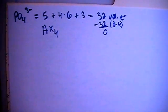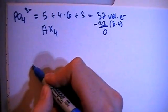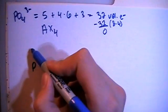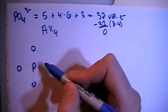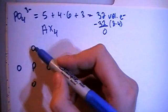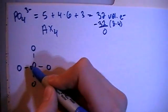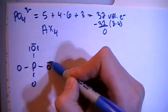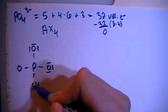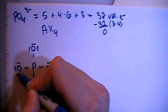So let's go ahead and start to draw this structure. We have the phosphorus in the center surrounded by the four oxygens. And we can go ahead and single bond all of the oxygens to the phosphorus in the center. And then let's go ahead and fill in the octet for each oxygen.